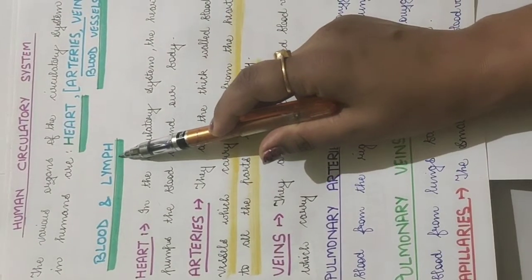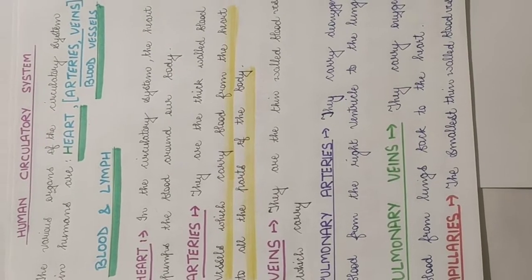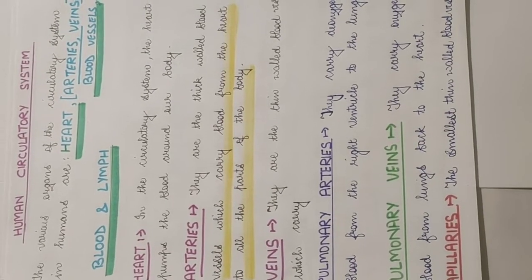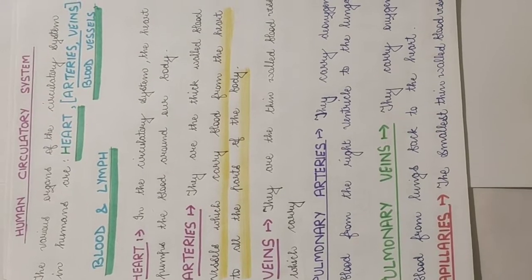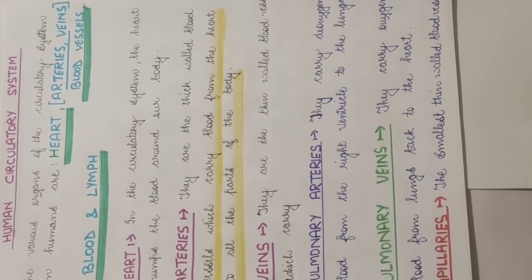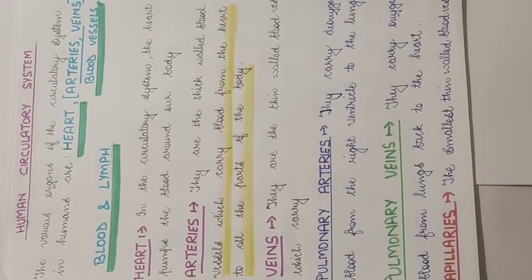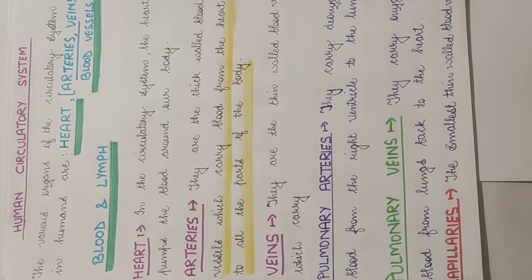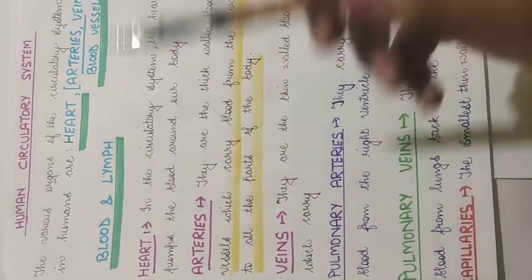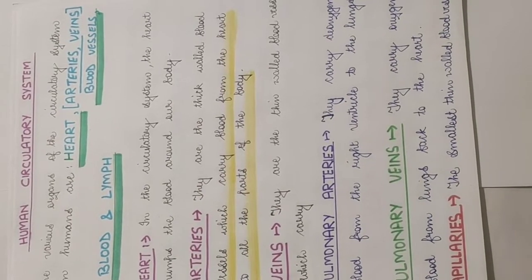Lymph is a colorless fluid — it is like blood but it does not contain RBCs. It just contains WBCs and some proteins. Although blood has more proteins, lymph has lesser proteins, but it has all the efficiency of WBCs, meaning it fights against any infection and cleans the organs. Since lymph does not contain RBCs, it is not a carrier of oxygen — the carrier of oxygen is only the blood.